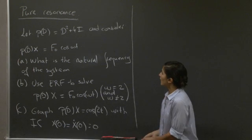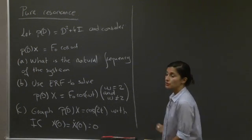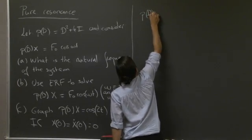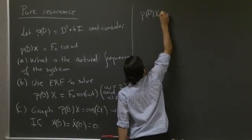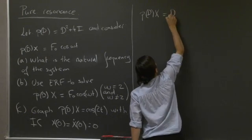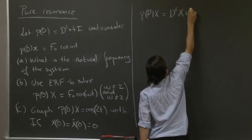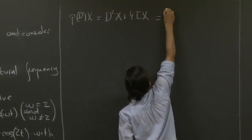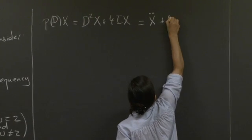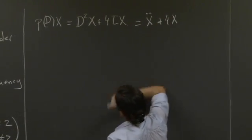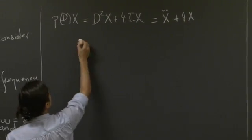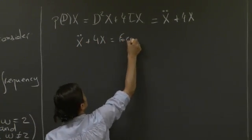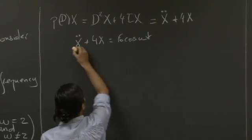Welcome back. OK, so first, what is the natural frequency of this system? So let's rewrite our system here, this is the left-hand side. So basically, this just gives us an x dot dot plus 4x on the left-hand side. So the system that we're solving is simply x dot dot plus 4x equals f0 cos omega t.